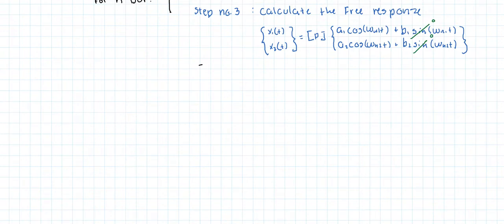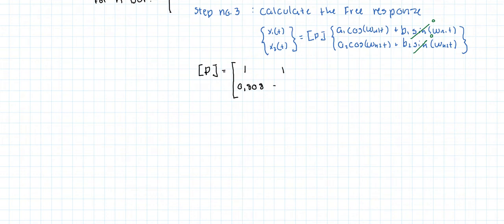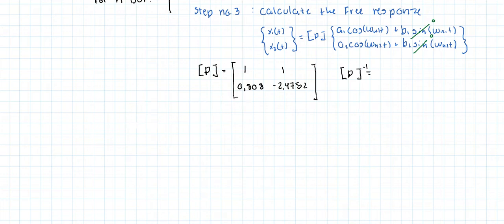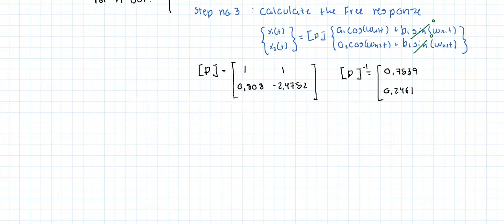Step one: we're going to create the P matrix by stacking up our mode shapes. We're going to take the inverse of that matrix. The inverse values we find are: 0.7539, 0.2461, 0.3046, and minus 0.3046.